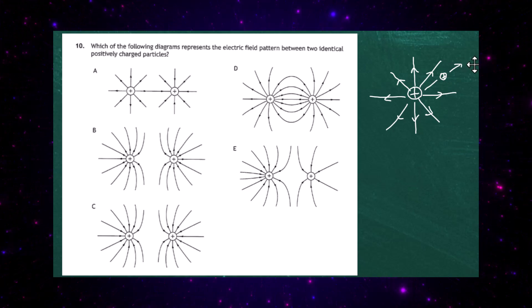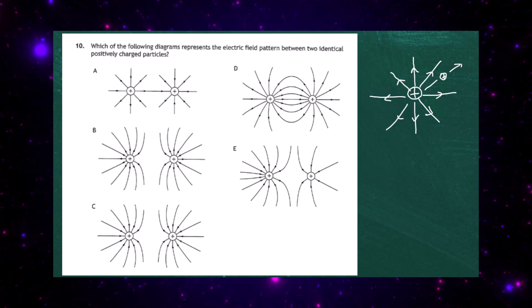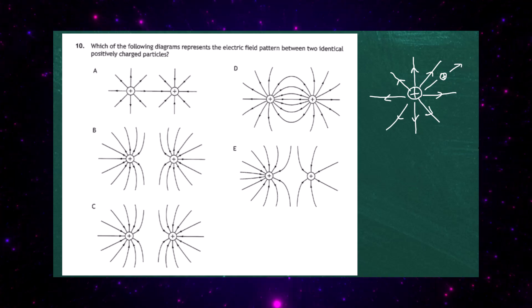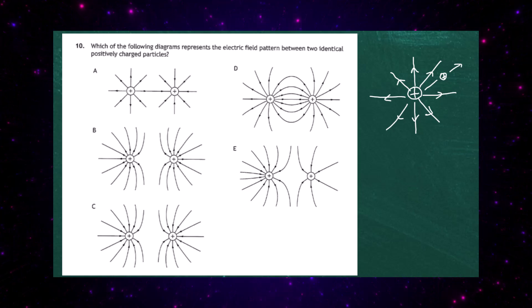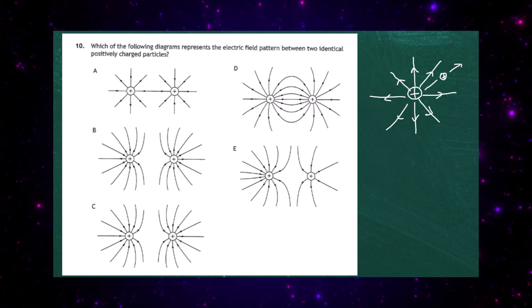All the arrows must emanate from a positive charge going away from it. That gives us quite a bit of a problem when evaluating the options.